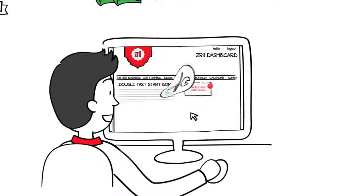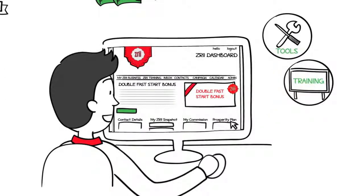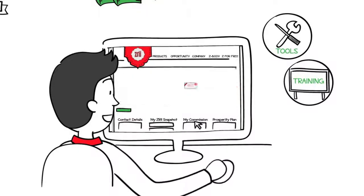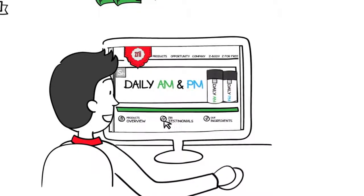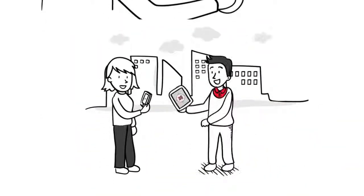Your back office gives you access to the best tools and trainings in the industry. What's more, you get your very own personal website customized to you and so much more. Whenever you meet a prospect, just send him or her to your personal website so they can sign up and start their very own Zree business just like Nora and you.